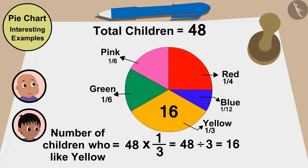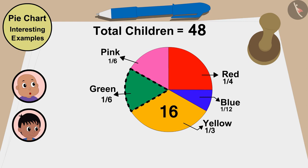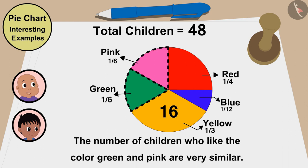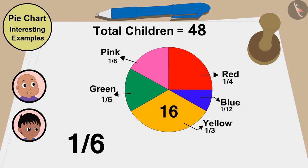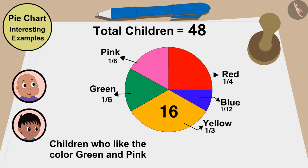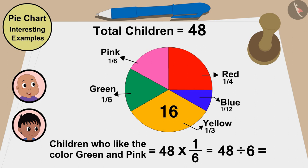Oh wow Raju, this is so easy. And look, these parts show that the number of children who like the color green and pink are very similar — the same number of kids have liked pink and green. Let me find how many children have liked green and pink. This part is 1 sixth of the pie chart, which means green and pink color is 48 multiplied by 1 sixth, or 48 divided by 6. That is 8 children. So 8 children like green and 8 like pink.